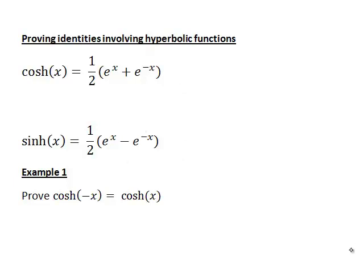Suppose we wanted to prove that cosh of negative x is in fact equal to cosh x. We should start with one side of the equation — usually the one that looks most complicated, as that allows the most manipulation to simplify it to look like the other side. In this case, the left hand side cosh of negative x looks slightly more complicated than the right hand side cosh of x.